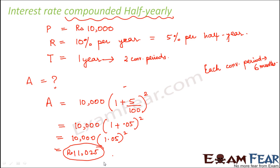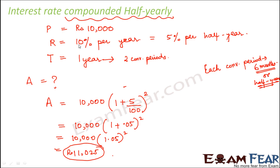So when interest is compounded half yearly, first find the number of conversion periods, then determine the duration of each conversion period. Then verify that the rate is expressed in terms of per half year. Since the rate here was given per year, we divided by 2 to get the rate per half year. Had the rate been given as 10% per half year already, there would be no need to divide.